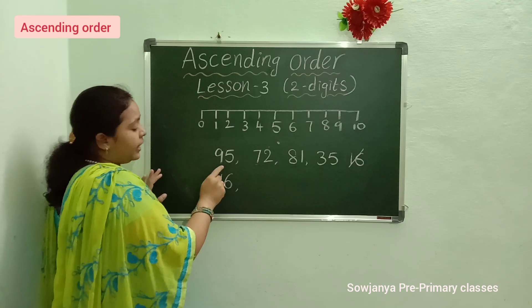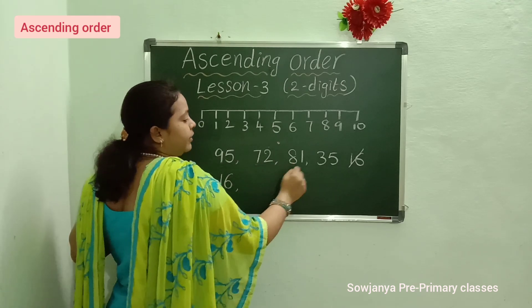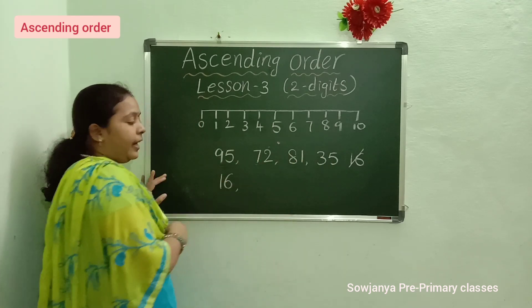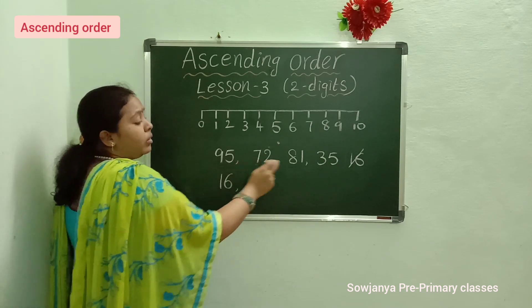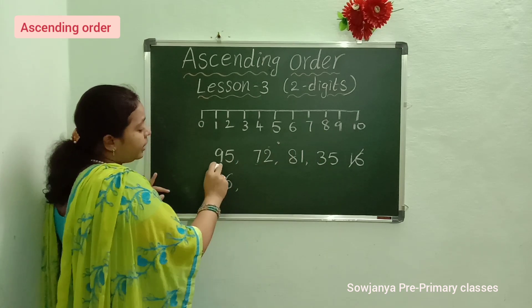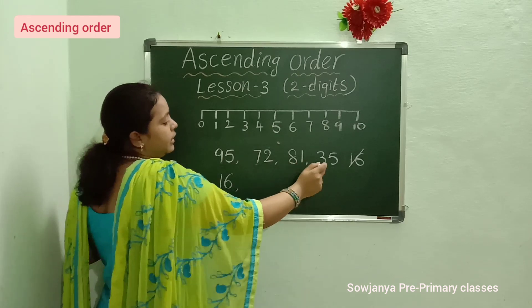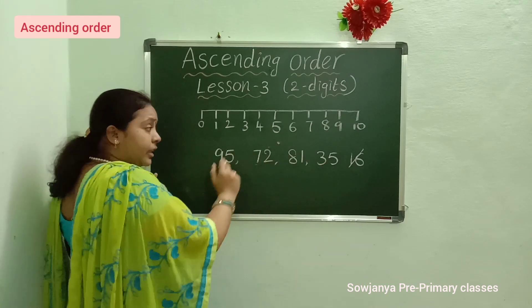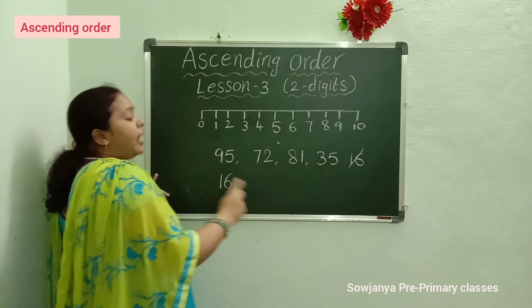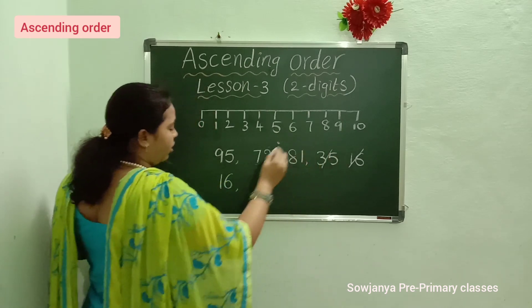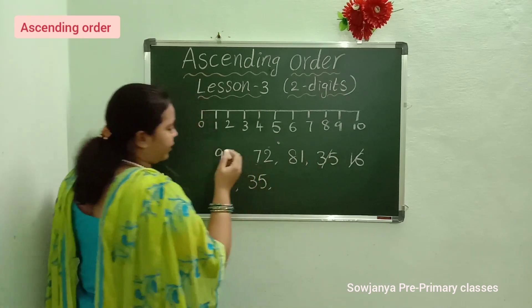Next, look again at the remaining numbers: 95, 72, 81, and 35. Again observe the 10's digits: 9, 7, 8, 3. In this, which is the small number? Yes, 35. Now cross out 35 and write 35 here.